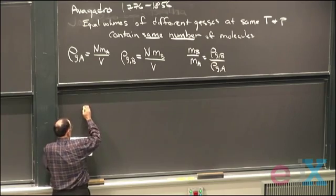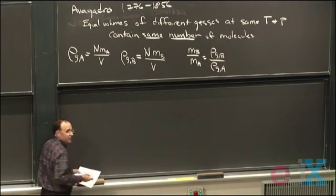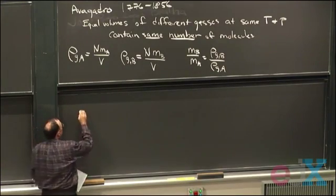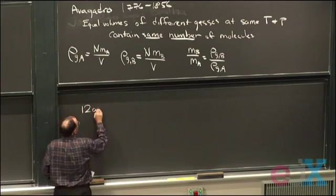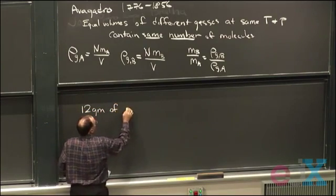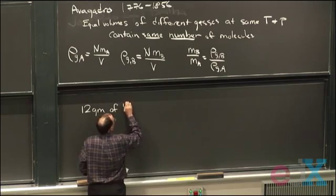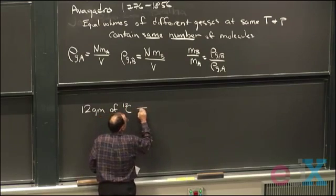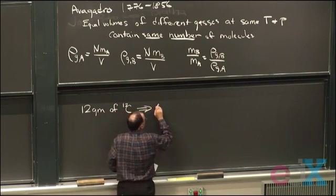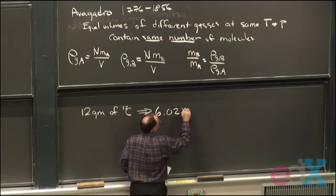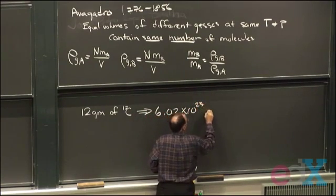But the actual number was defined for a specific amount of material. So, we'll call it 12 grams of carbon-12 has 6.02 times 10 to the 23rd carbon atoms.